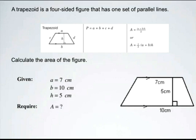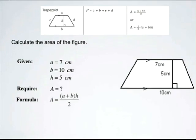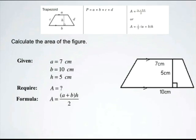What we require is the area. The formula is A equals the sum of the parallel sides, A plus B, multiplied by the height and divided by 2. Now to make our substitutions, side A is 7 centimeters, side B is 10 centimeters, the height is 5 centimeters, and we'll be dividing all that by 2.